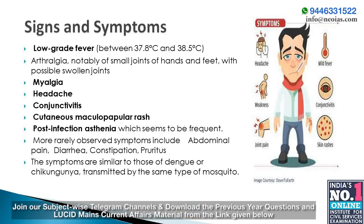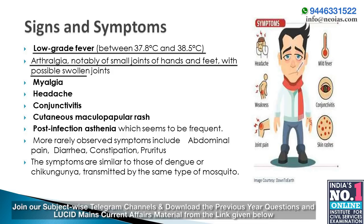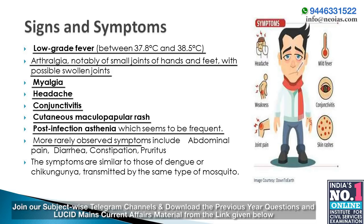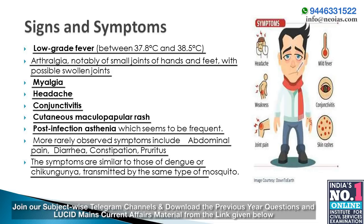Signs and symptoms include low-grade fever between 37.8°C and 38.5°C, arthralgia notably of small joints of hands and feet with possible swelling, myalgia, headache, conjunctivitis, cutaneous maculopapular rash, and post-infection asthenia. More rarely observed symptoms include abdominal pain, diarrhea, constipation, and pruritus. The symptoms are similar to those of dengue or chikungunya, and it is transmitted by the same type of mosquito.